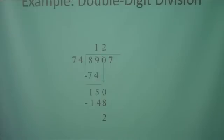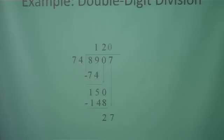We have one more number to bring down, so let's bring that one down. Now we need to know how many times 74 can go into 27 — it cannot, so we're going to put a 0 to show that it cannot go in. 0 times 74 is 0. Since 27 is less than 74, that's a good estimate. There's no more to bring down, so our answer is 120 remainder 27.